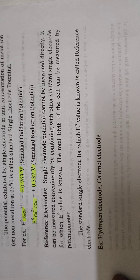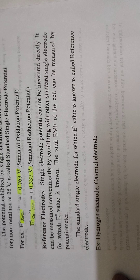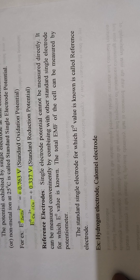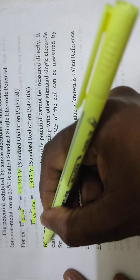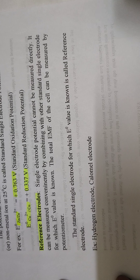For example, if you want to find the standard single electrode potential of zinc, the zinc electrode should be dipped in its own salt solution at 25 degrees centigrade, at 1 atmosphere pressure, and 1 molar concentration solution. Zinc always undergoes oxidation, so the standard oxidation potential of zinc is 0.763 volts.